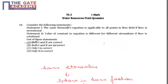Hence, making applicability of Bernoulli's equation universal in case of irrotational flow. Statement 2 says that the value of constant in the equation is different for different streamlines if flow is rotational.